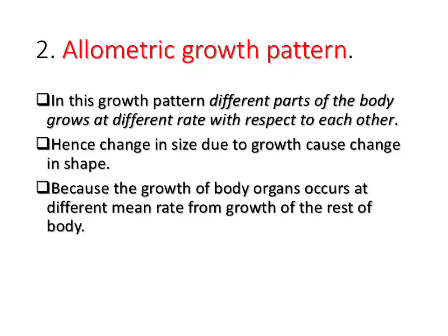The second one is the allometric growth pattern. 'Allo' means different, while 'metric' means measurement. In this growth pattern, different parts of the body grow at different rates with respect to each other, so each organ has its own rate of growth.